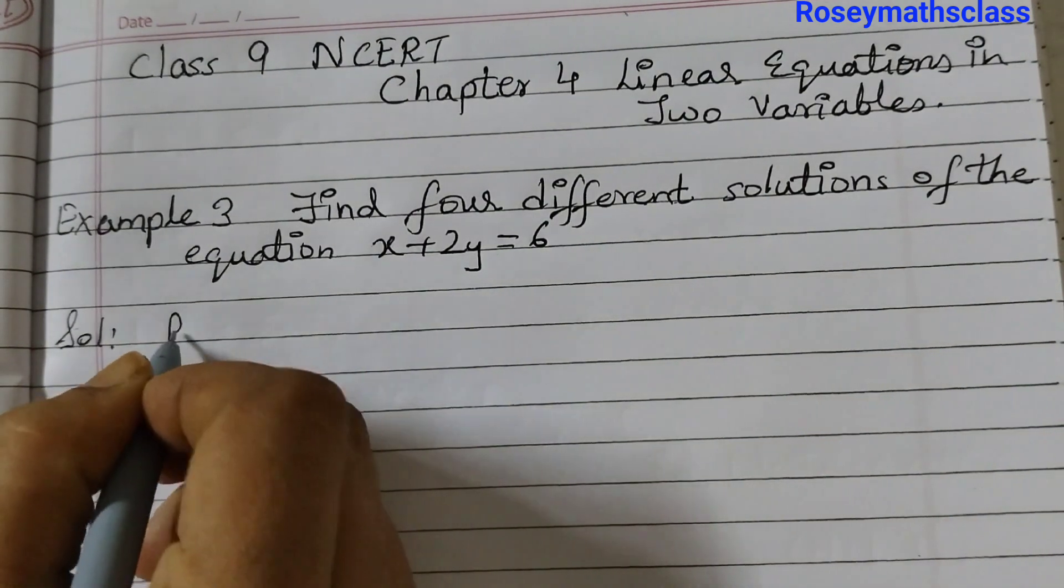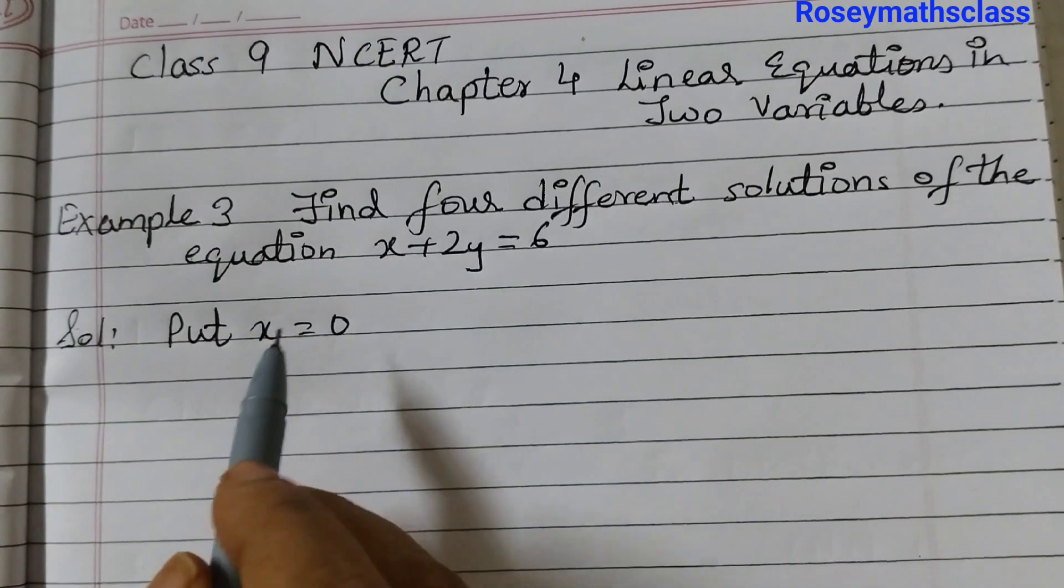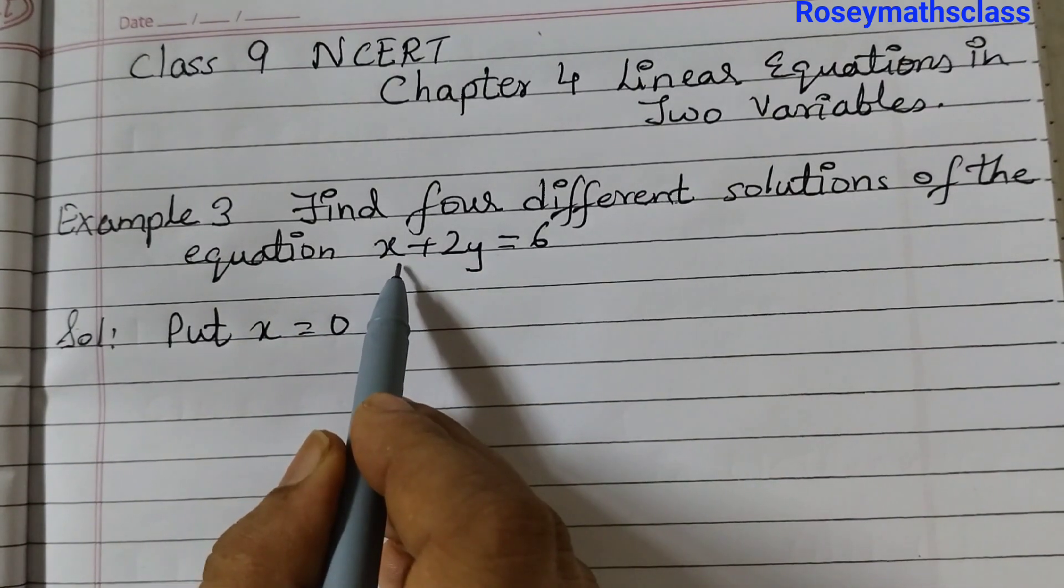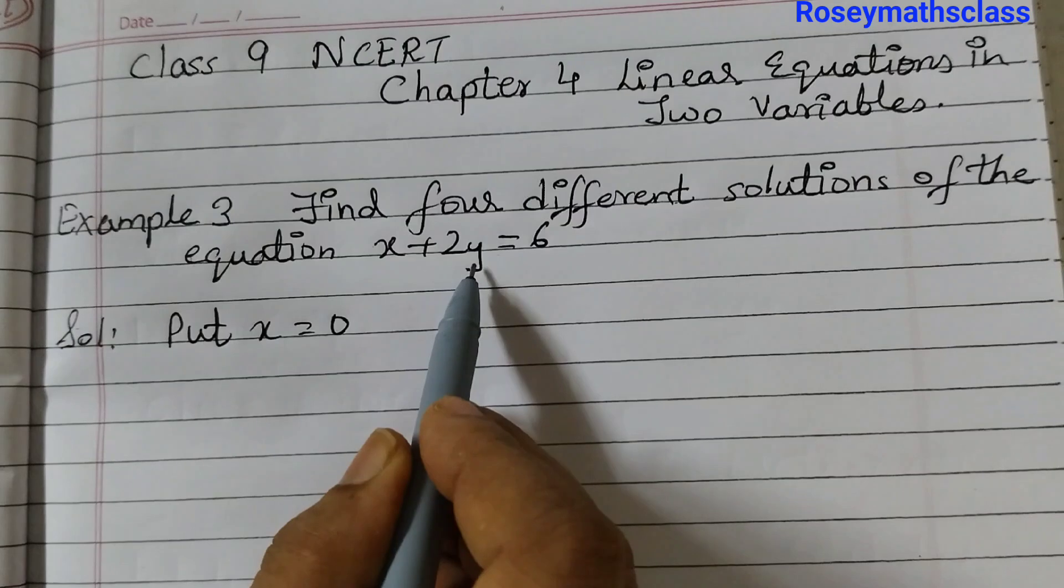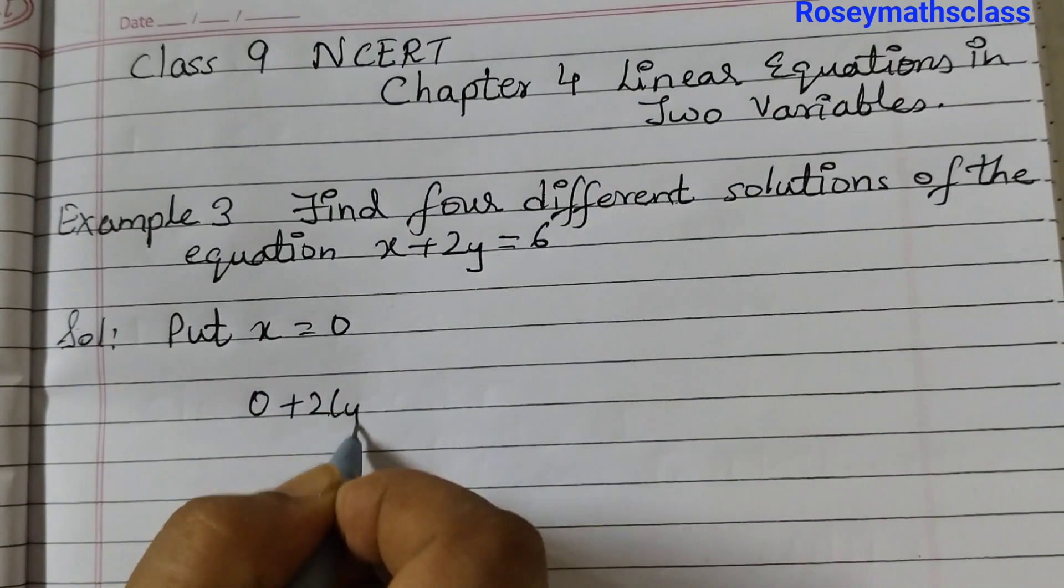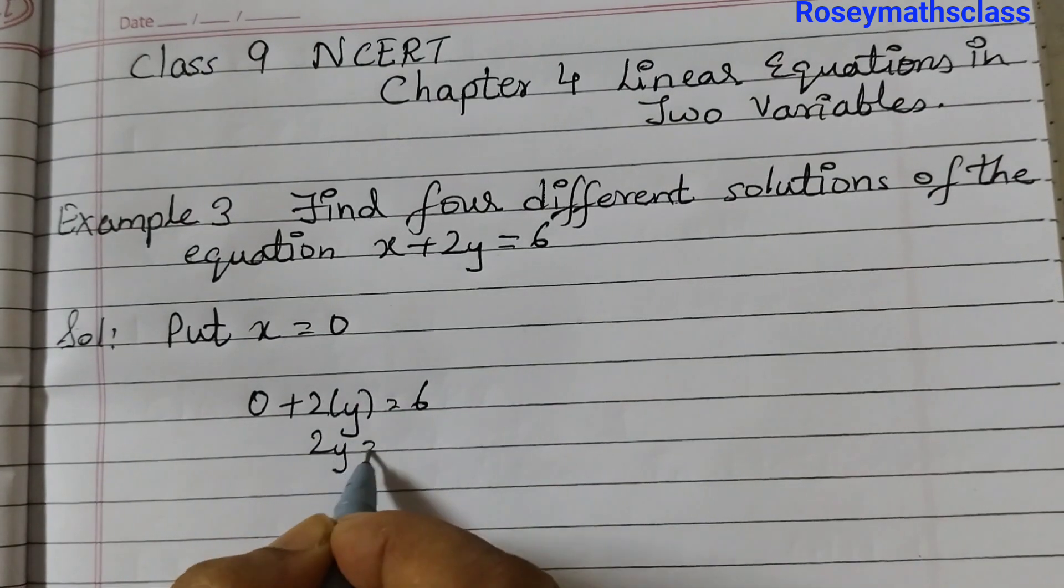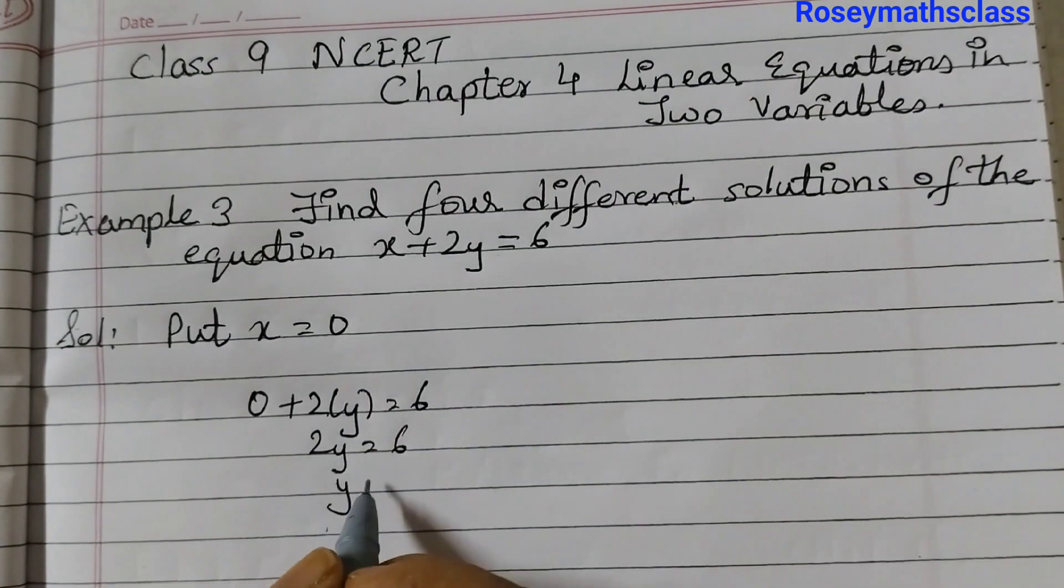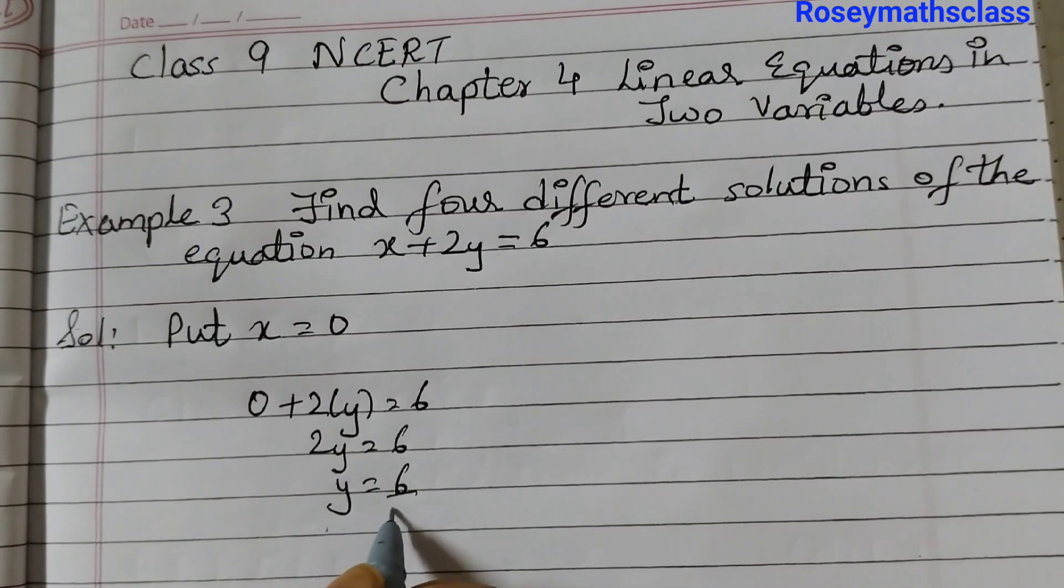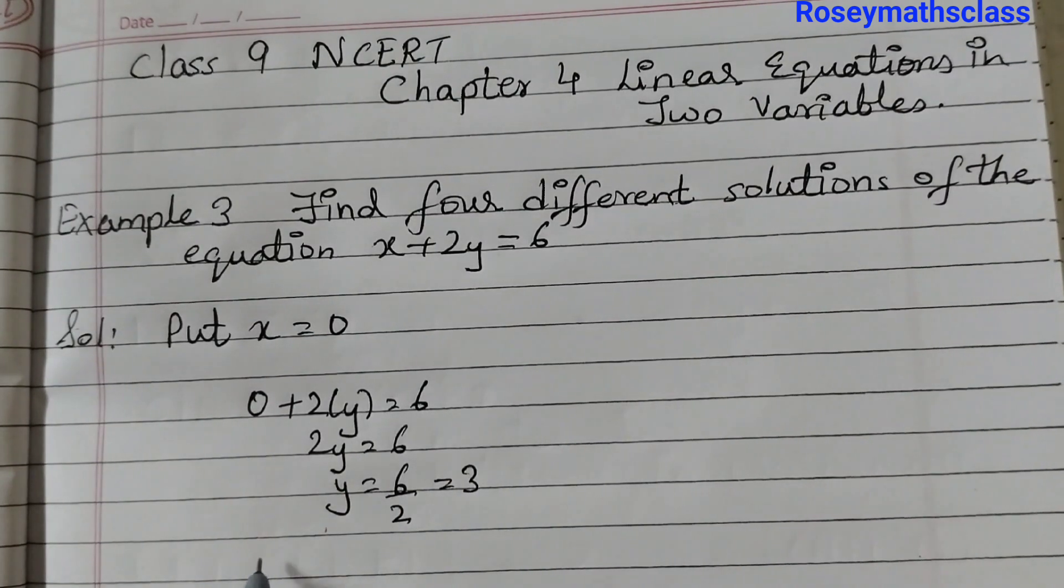Let's say we put x is equal to 0. So x will be 0 and then we will find out the value of y. So 0 plus 2y is equal to 6, 2y is equal to 6, y is equal to 6 divided by 2 that is 3. So one of the solution is 0, 3.